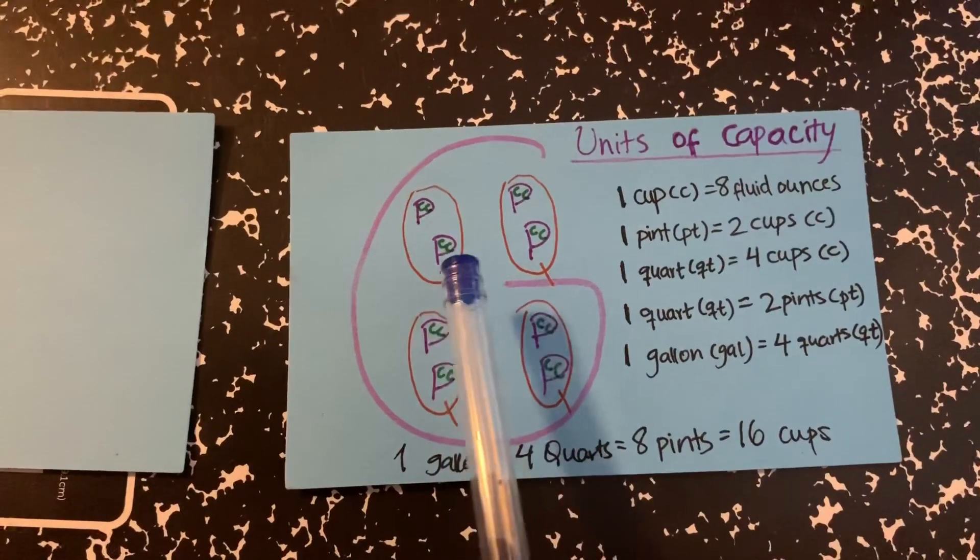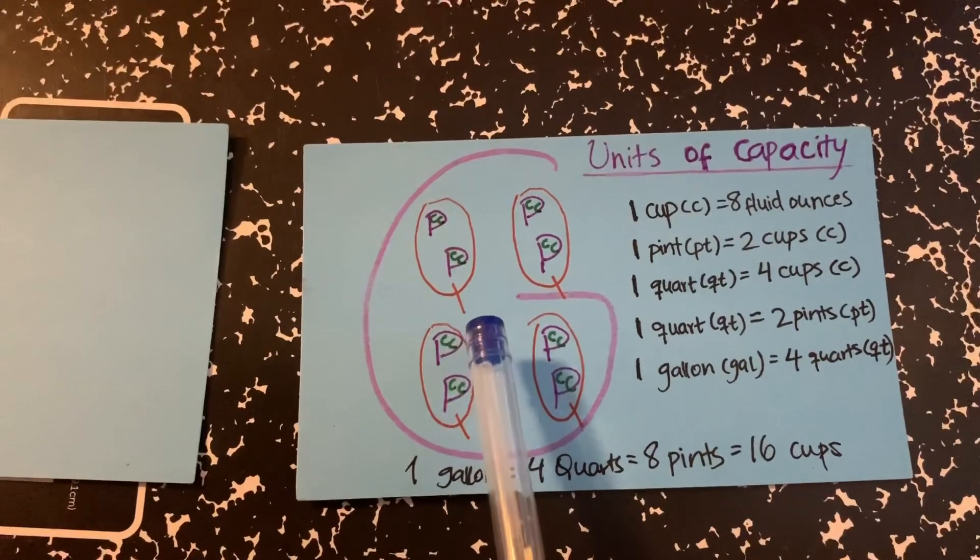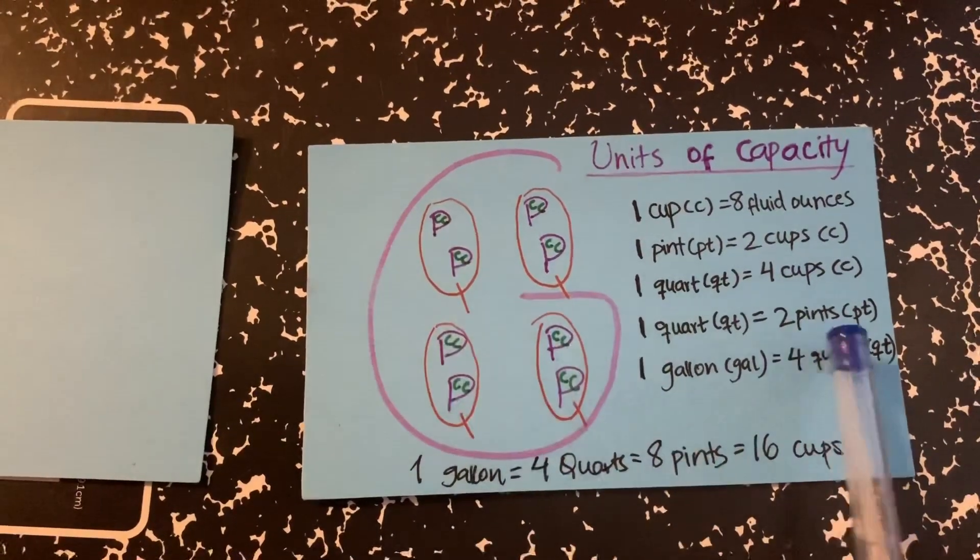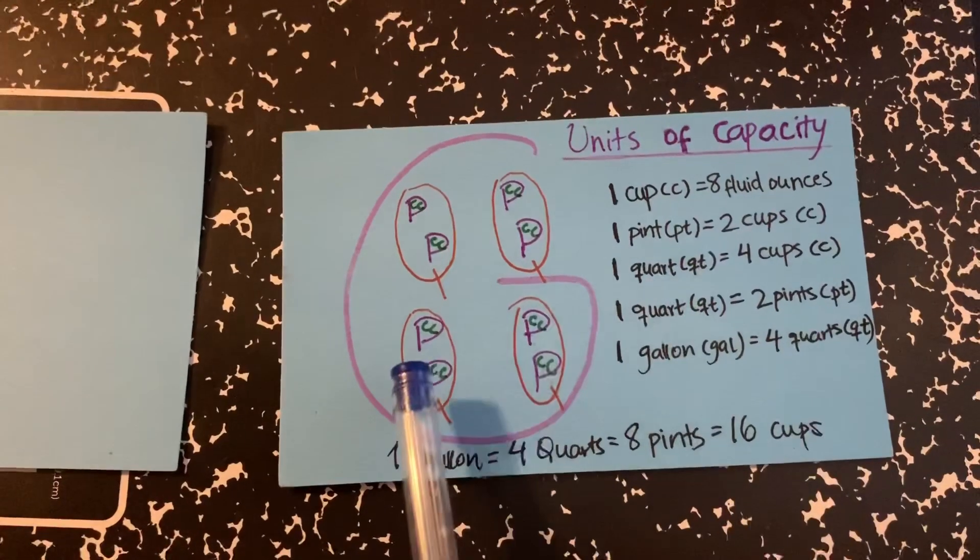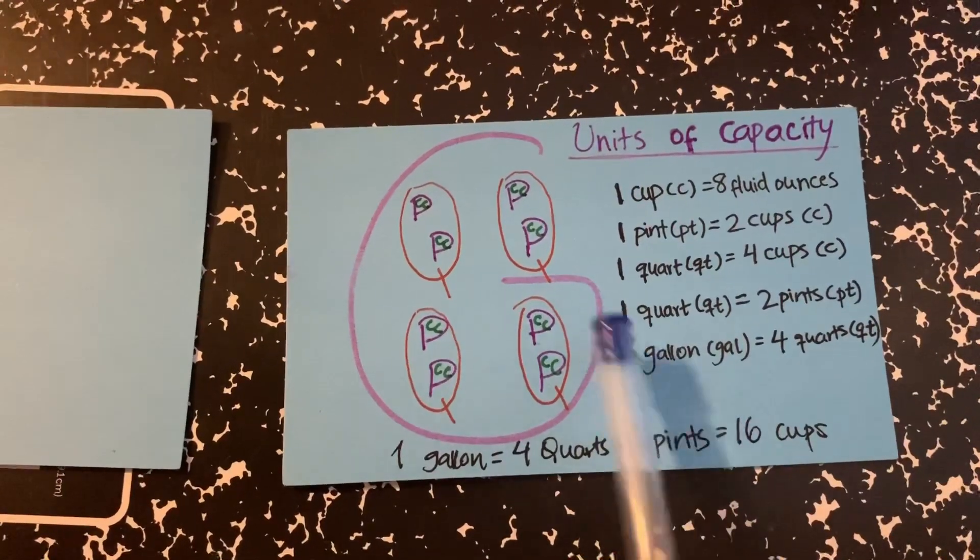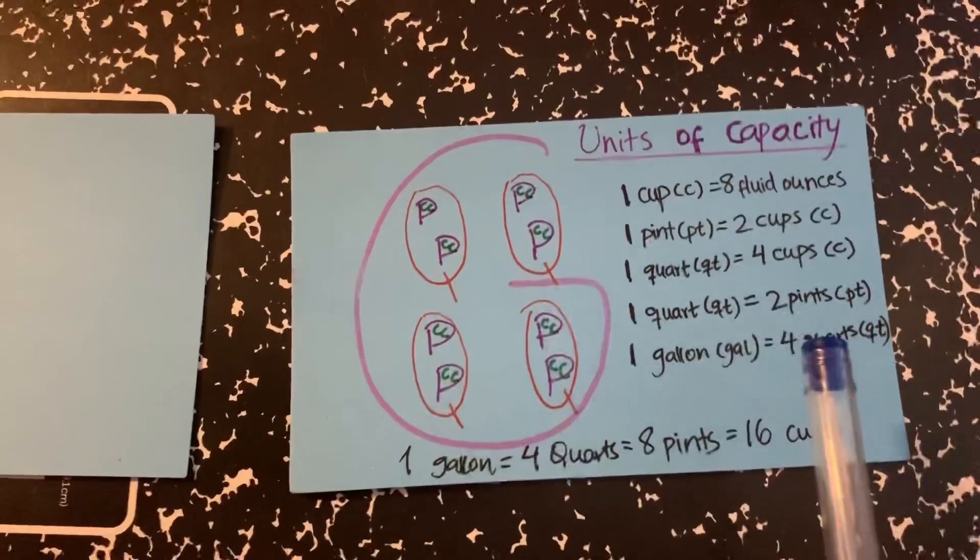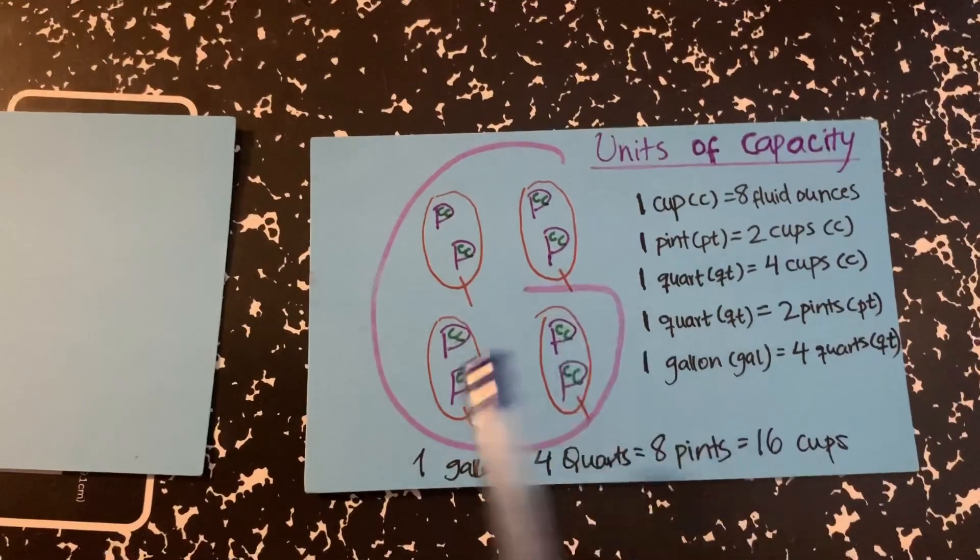Now 1 quart, again the Q, is equal to 2 pints because it has 2 Bs. And lastly, 1 gallon, the huge G, has 4 quarts, 4 Qs.